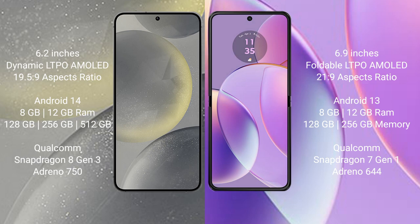Samsung Galaxy S24 runs on the Android 14 operating system. Motorola RAZR 40 runs on the Android 13 operating system. Samsung Galaxy S24 comes with 8GB, 2LGB RAM and 128GB, 256GB, 52LGB internal storage.